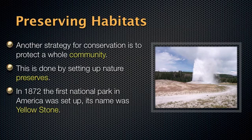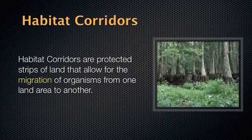Another strategy for conservation is setting up habitat corridors — protected strips of land that allow for the migration of organisms from one land area to another. Instead of preserving the entire community, we're preserving a strip of land that allows migratory species to go from one place to another. This is the next best thing if we can't protect the entire community.